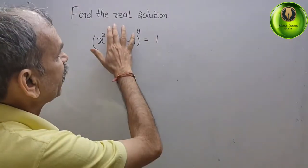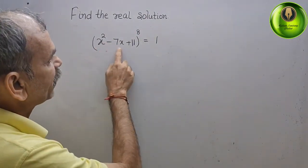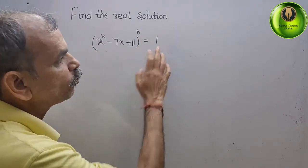Your question is, find the real solution. What is that? x square minus 7x plus 11, whose power is it? That is equal to 1.